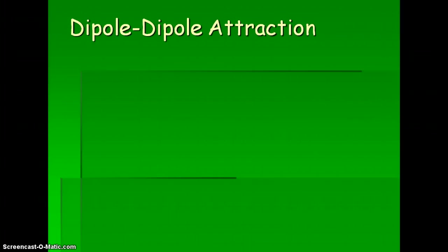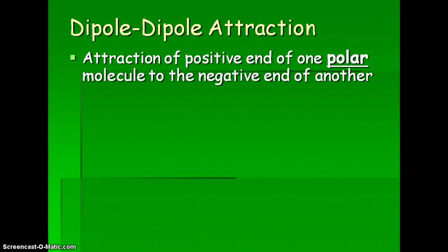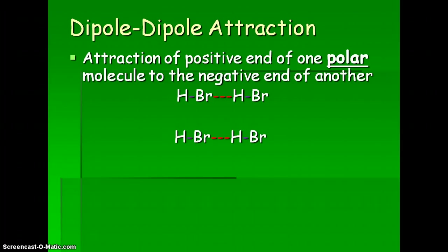The next intermolecular force is a dipole-dipole attraction. This is the attraction of the positive end of one polar molecule to the negative end of another. In a polar molecule, one end is always more positive and the other always more negative — so this is not temporary, making these stronger than London dispersion forces. For example, in HBr molecules, bromine is the more negative side and is attracted to the hydrogen, the more positive side, of another molecule.